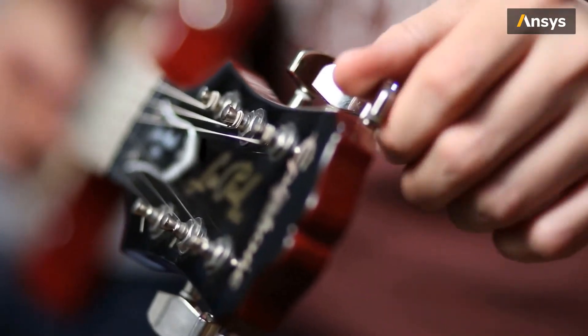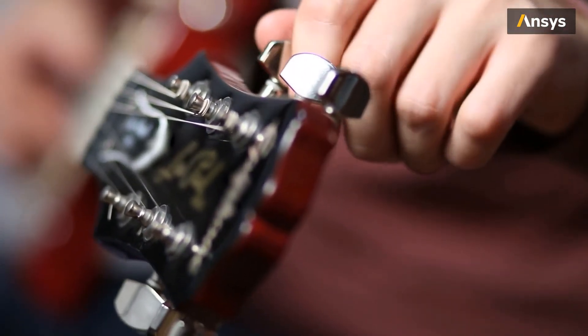Guitar strings are pre-stressed via tensioning of the strings using the tuning knobs. If you tighten the string, the natural frequency or note of the string will go up. If you loosen the string, the natural frequency will go down. The same for other stringed instruments.